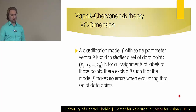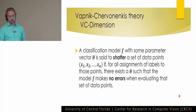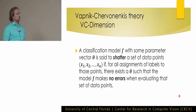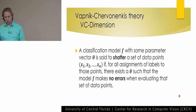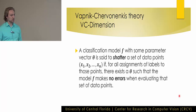Moving on, we're going to talk about VC dimension, getting further into the idea of model capacity. A classification model F with parameter vector theta is said to shatter a set of input points x1 to xn if, for all assignments of labels to those points, there exists a theta such that the model F makes no errors when evaluating that set of data points. So given a model with parameters, we can label certain input data perfectly — if that's the case, we have shattered that set of data points.